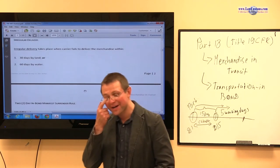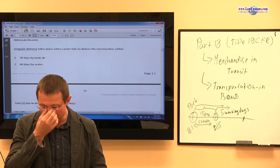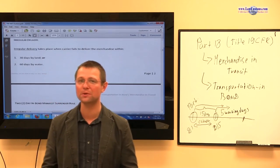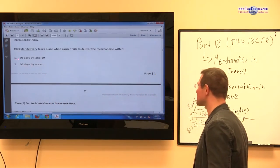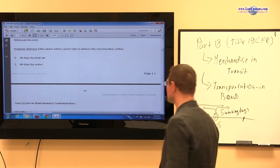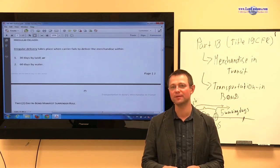Irregular delivery also has a definition, because irregular in one's head, in one's mind, may mean something totally different than in others. In this situation, it talks about if the delivery fails to deliver within the thirty day rule or within the sixty day rule if it goes by water, then that delivery is irregular.